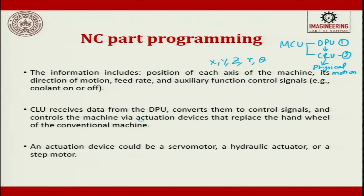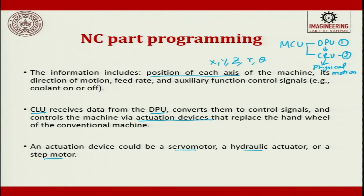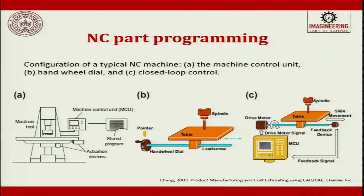The information included in the part program covers: position of each axis (x, y, z, r, theta), direction of motion, feed rate, and auxiliary function control signals such as coolant on and coolant off. The CLU receives data from DPU, converts them into control signals, and controls the machine via actuation devices that replace the hand wheel of a conventional machine. CLU actuates devices such as servo motors, hydraulic actuators, or stepper motors.